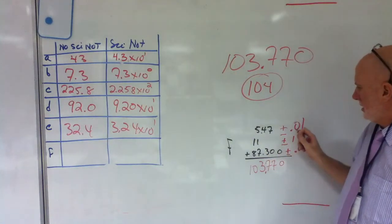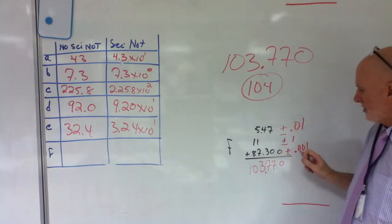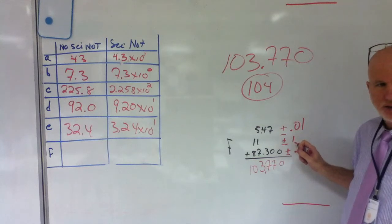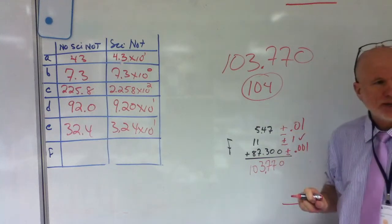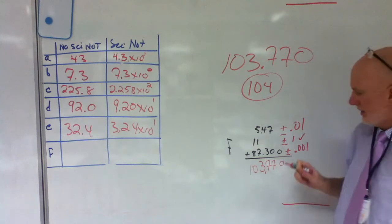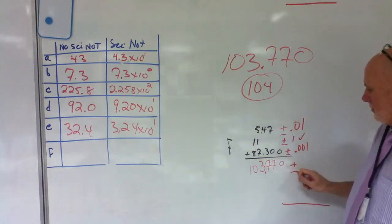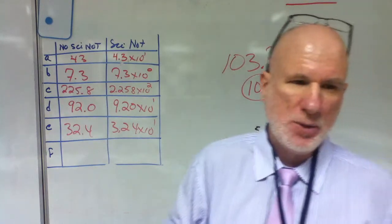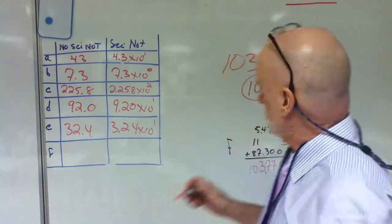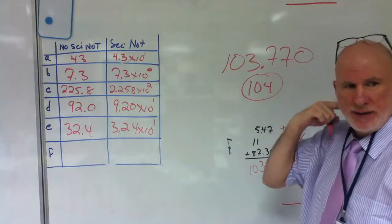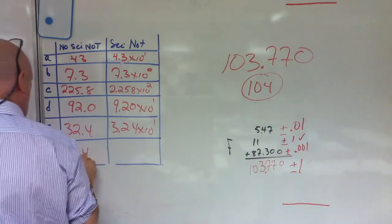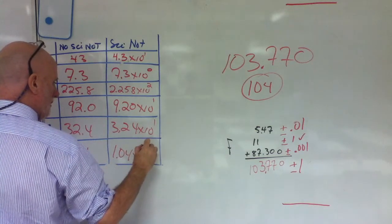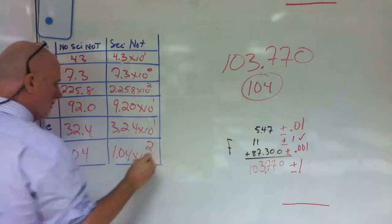So here the uncertainty is thousands, hundredths, ones. Which one has the greatest uncertainty? This one, correct? Therefore, which one has the lowest precision? This. So my answer must be plus or minus 1. That must be the precision of my answer. You with me, Kamal? So what's my answer? 104, correct? 104, and then 1.04 times 10 to the second. Are we off?